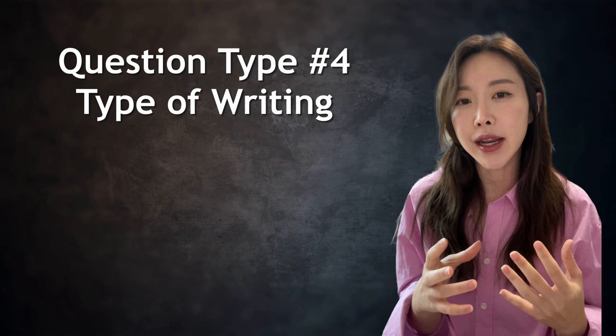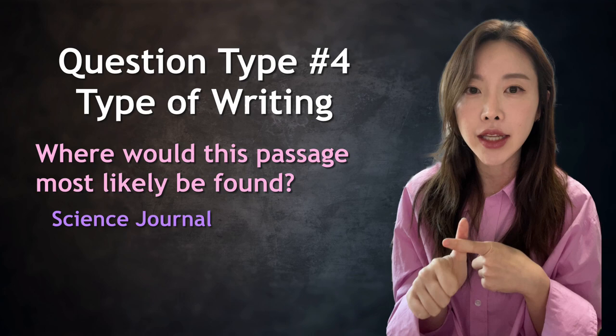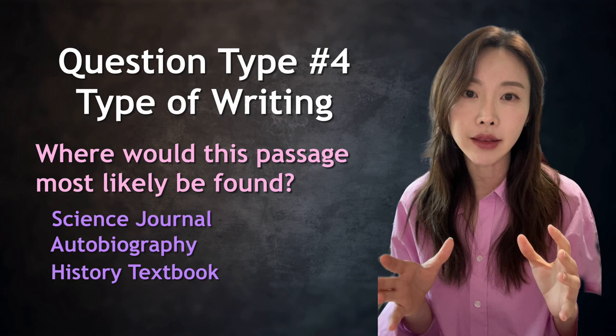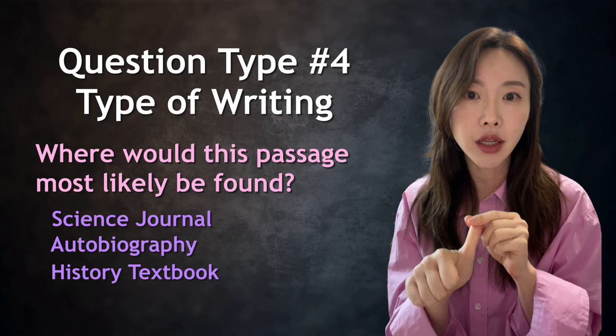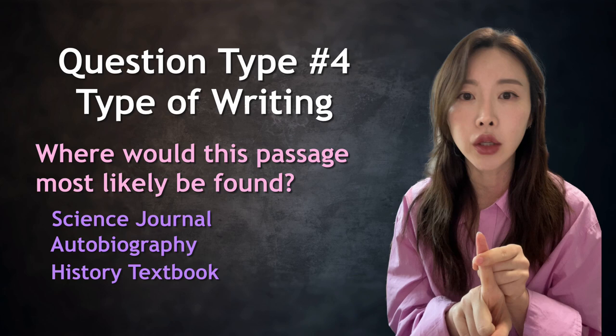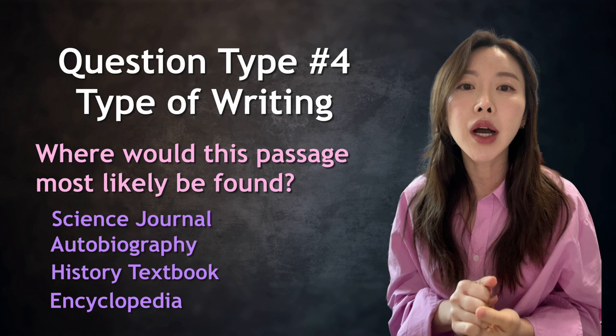Another type is the type of writing question — sometimes they ask where this kind of passage would be found. For example, would it appear in a science journal, someone's autobiography, or a history textbook? You need to know what the passage is about. If it's about science, it likely came from a science textbook or journal. If it's about someone's own life, it likely came from an autobiography. If it's very informative, it might be from an encyclopedia.